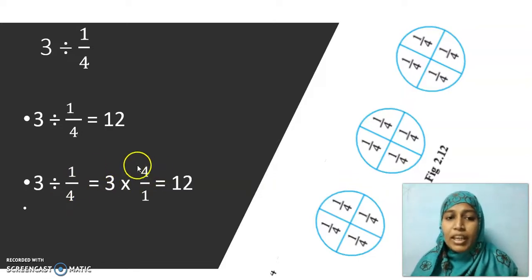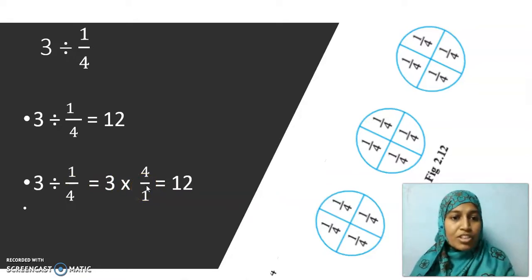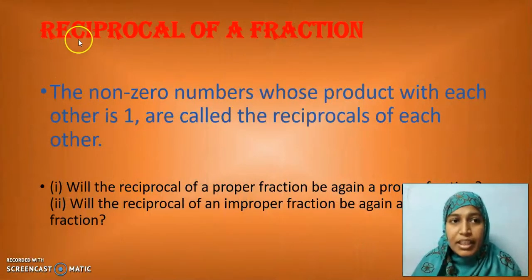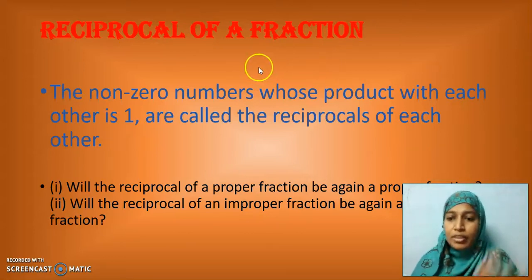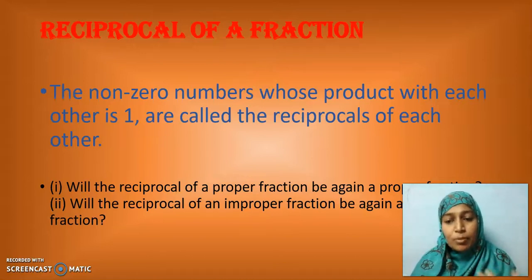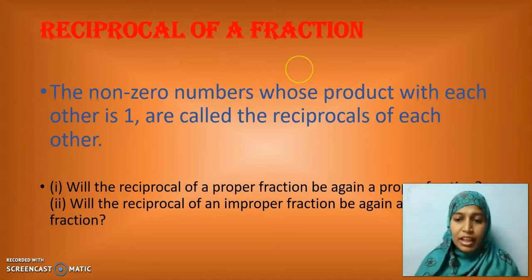The divisor should be changed upside down. Now I am going to introduce a special word — reciprocal. What is that word? Reciprocal. Reciprocal of a fraction means writing it upside down. If I say 1 by 4, the reciprocal of 1 by 4 is 4 by 1. Reciprocal of 5 by 2 is 2 by 5. Saying upside down is called reciprocal.